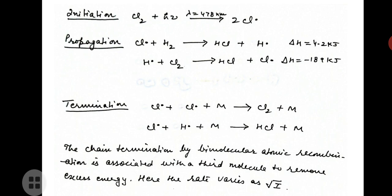Then comes the chain termination step. Termination of the chain is very sensitive to experimental conditions. If atoms are removed by wall effects or by inhibiting molecules such as O₂ present in the system, the rate of reaction varies directly as the intensity of radiation I. The termination of the chain by bimolecular atomic recombination is associated with a third molecule to remove excess energy. In this case, the rate of reaction varies as the square root of I.